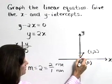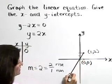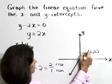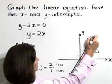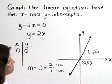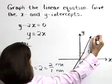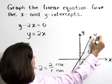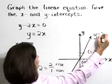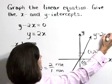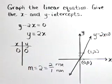Let's graph the line by connecting those points and extending them. This is the graph of the equation y minus 2x is equal to zero.